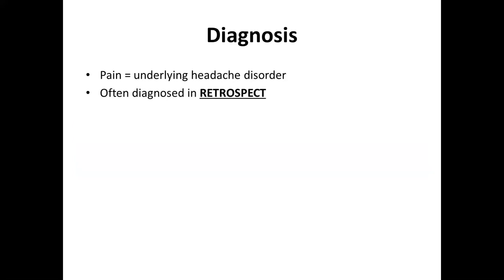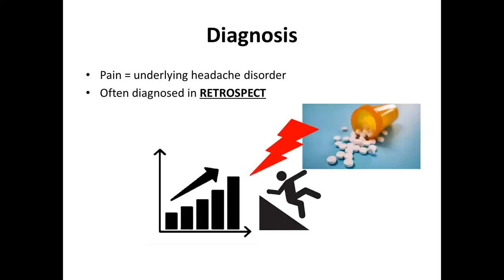The diagnosis is often made in retrospect, and the pain mimics the underlying headache disorder — if you have migraine, it mimics migraine; if you have tension-type headache, it mimics tension-type headache. The development of medication overuse headache often follows a fairly standard pattern: migraines increase in frequency, the patient takes more painkillers, which is completely understandable, and then before they know it they're hitting the threshold of taking painkillers on more than 10 or 15 days in a given month. Over time, medication overuse headache develops — it's something patients gradually drift into.